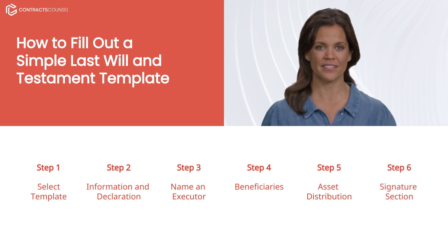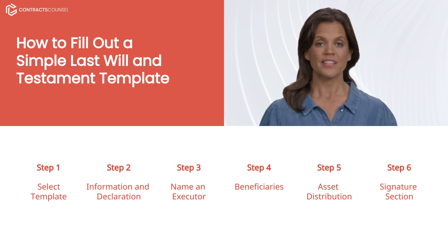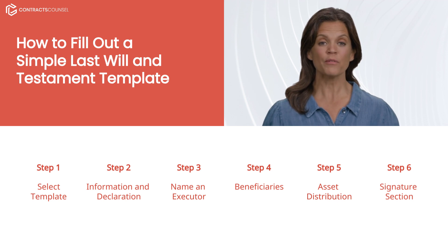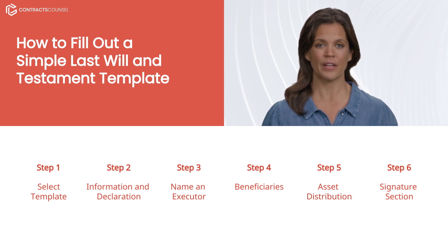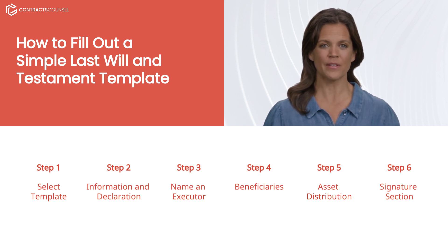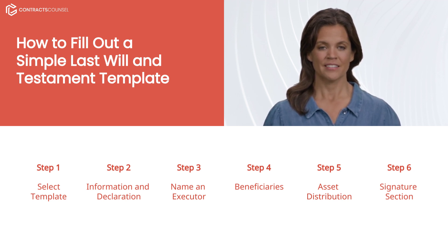Step six, signatures and witness section: add the full legal name of the testator, along with signatures from two or more witnesses, to make the will valid. A notary public may also be added for extra verification, if required. Remember, these templates are drafted by lawyers and don't need further editing, unless you choose to customize the agreement to better suit your needs.